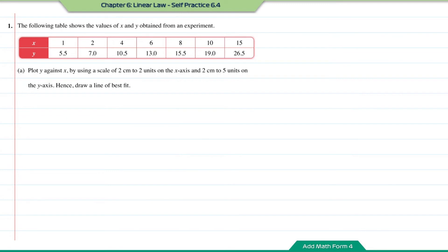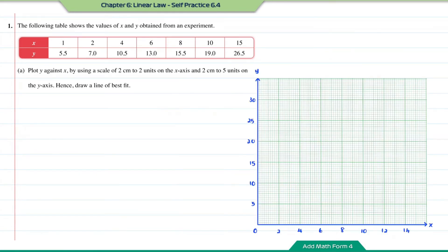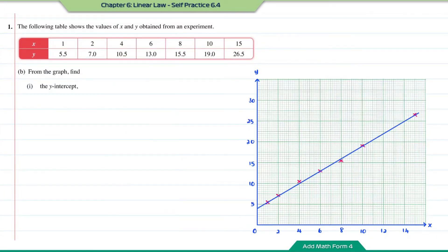Practice 6.4, question number 1. The following table shows the values of X and Y obtained from an experiment. Part A: plot Y against X using a scale of 2 cm to 2 units on the X-axis and 2 cm to 5 units on the Y-axis. Hence, draw the line of best fit. We plot the scale, then the values from the table, then draw the line of best fit. The y-intercept is the intersection point where the straight line meets the y-axis, and its value is equal to 4.